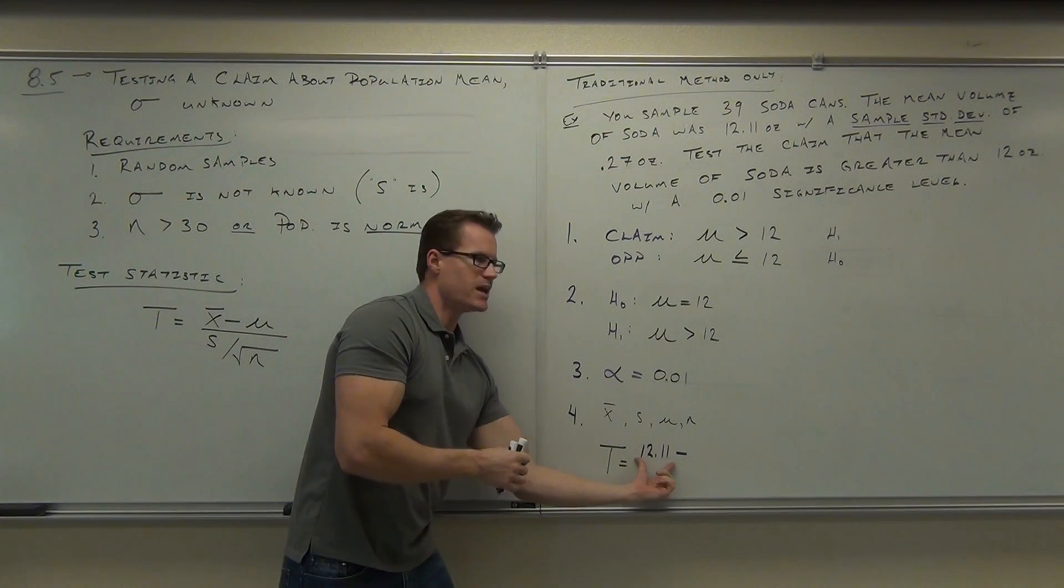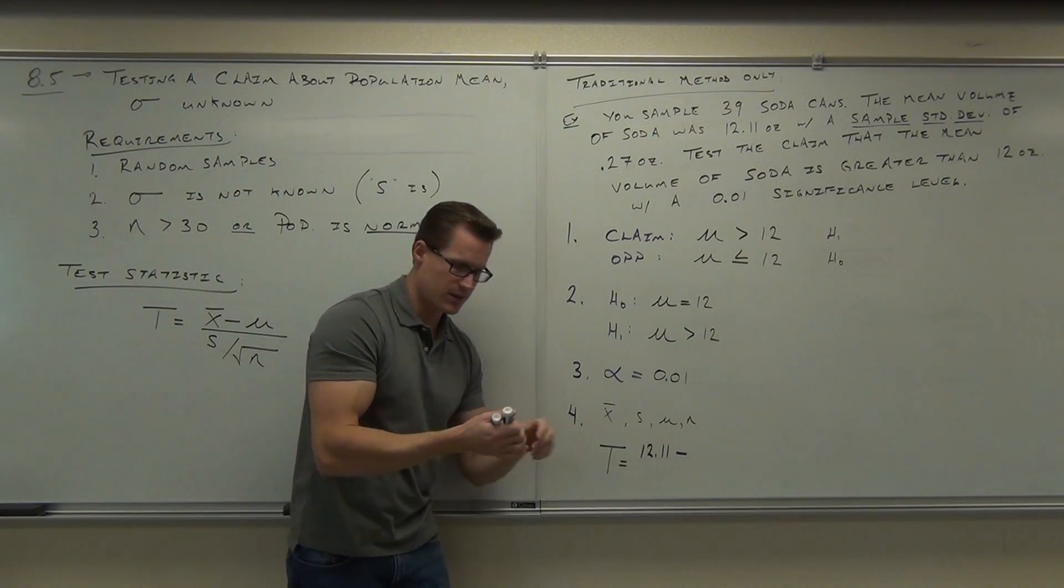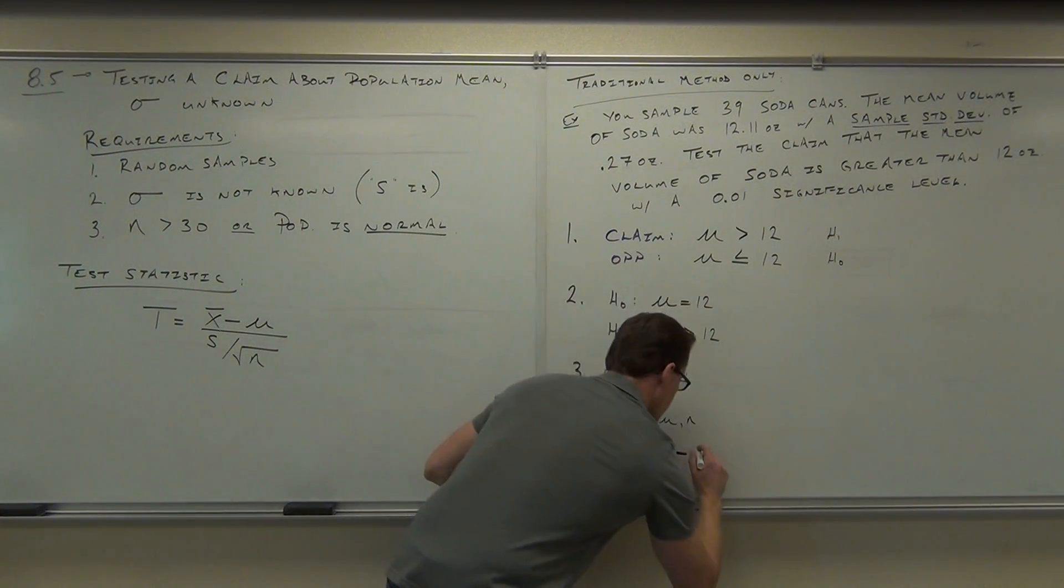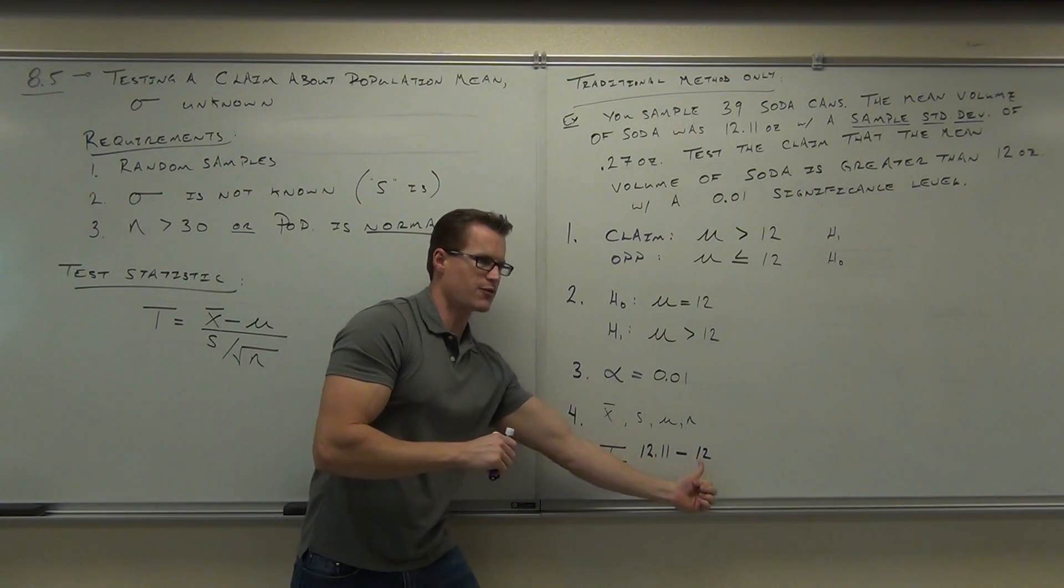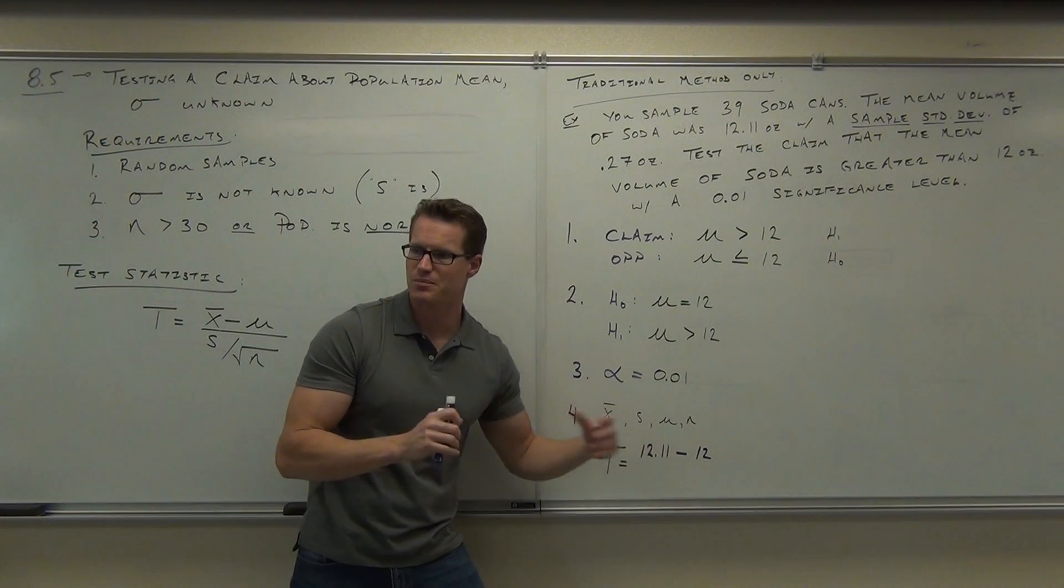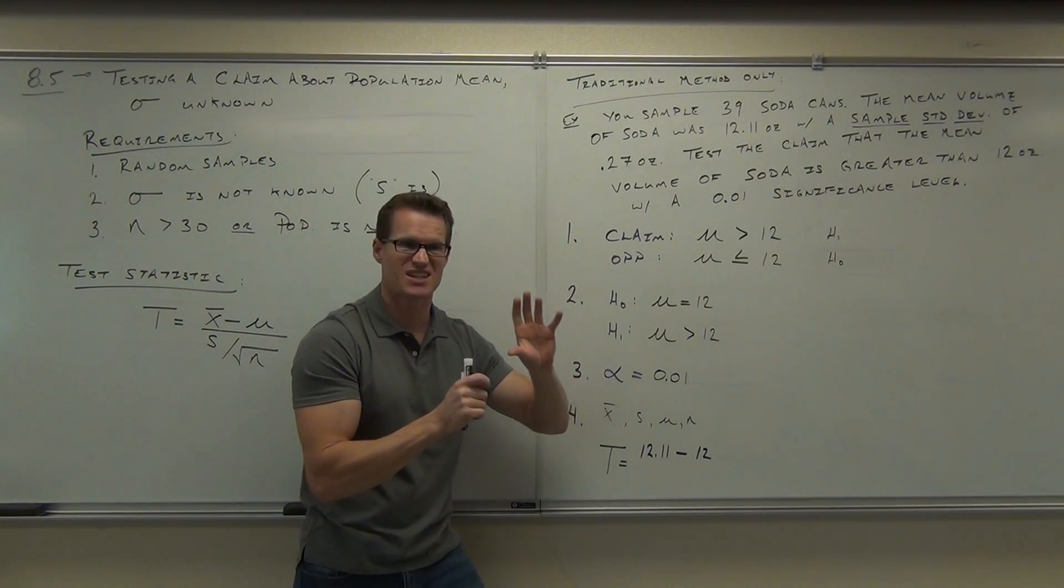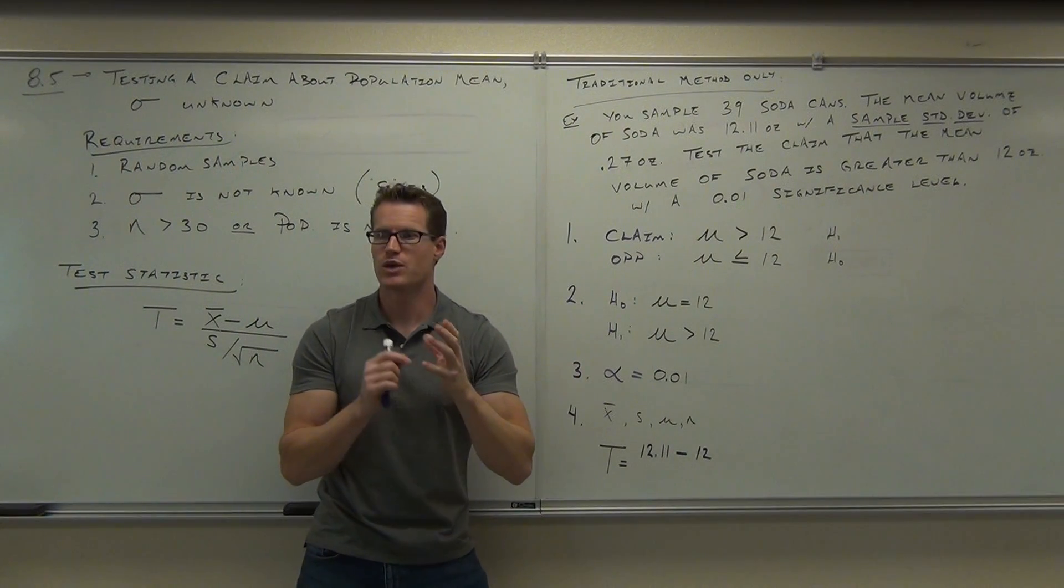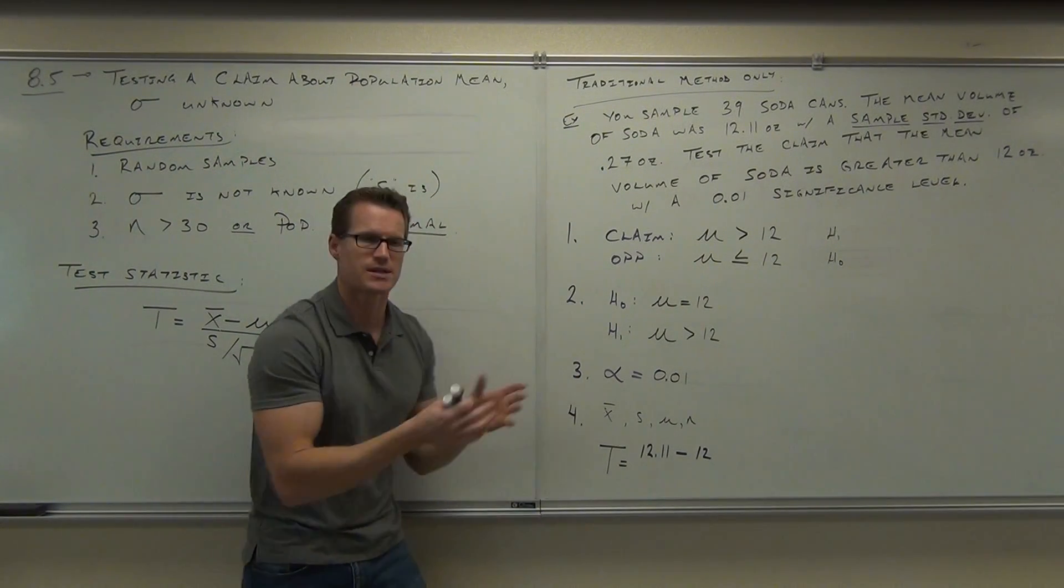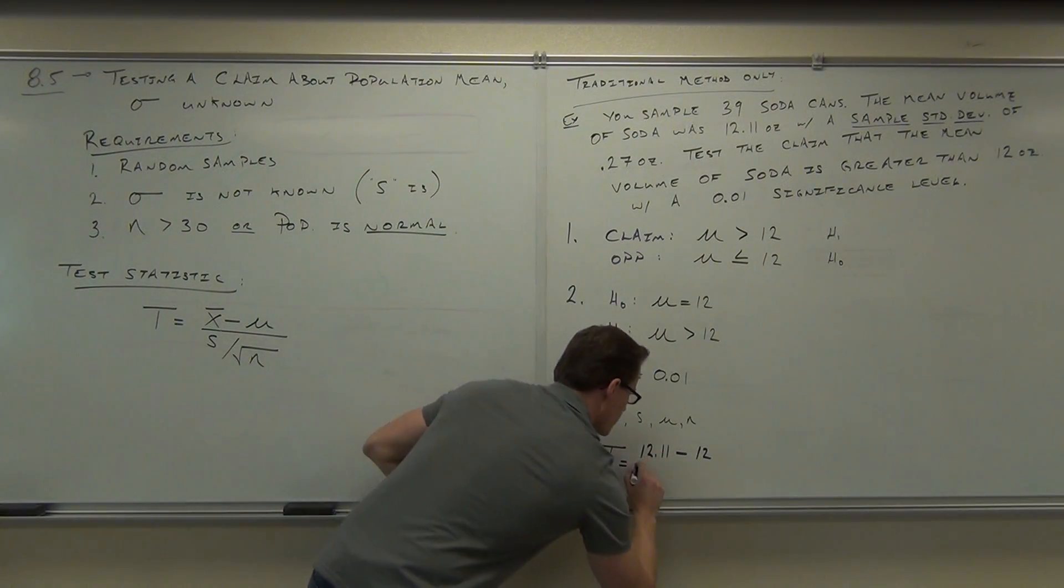So, this is our evidence saying, is this far enough? Look at it. What this basically says is, is this far enough away from 12? Clearly, it's bigger than 12, but is it big enough? Is it big enough to a significant level, that's a significant level, to say that we are producing too much soda in these cans? That's the idea.